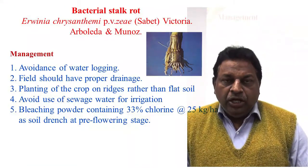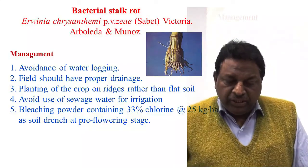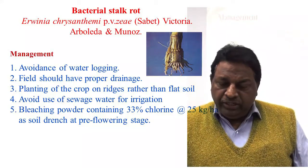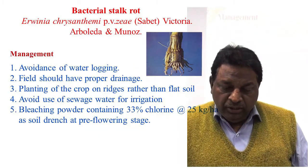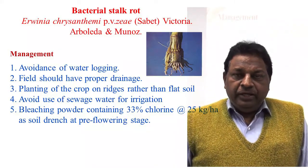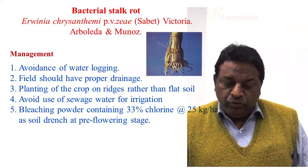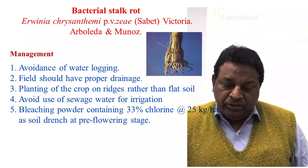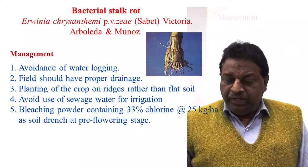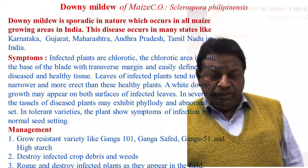For management: first, avoidance of waterlogging conditions — the drainage system should be good. Second, the field should be properly drained. Third, planting of the crop on ridges rather than flat soil reduces chances of Bacterial Stalk Rot. Next, avoid use of sewage water for irrigation. If disease appears, apply bleaching powder at 33% chlorine at 25 kg per hectare as a soil drench at pre-flowering stage.